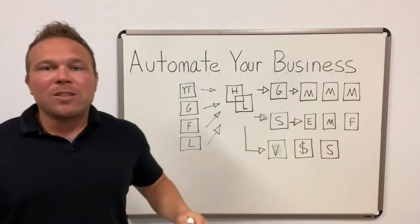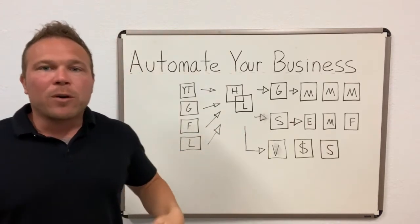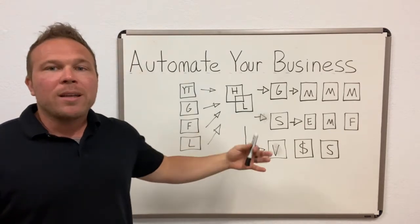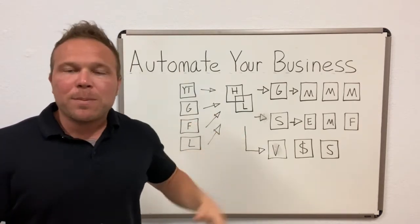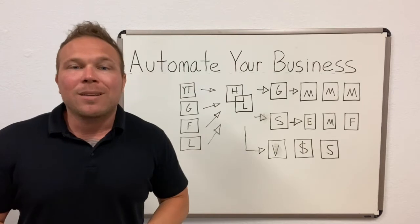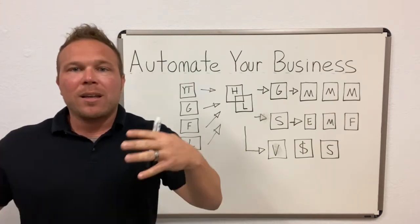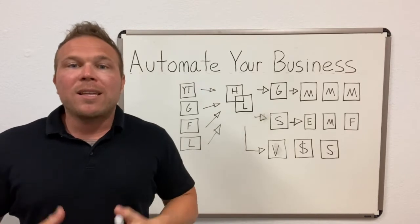So when automating your business, you want to have a blueprint and this is my first lesson in my automation course is how to set up a blueprint. You have to have the blueprint in place first before you start building any automation. Same thing as if you were building a house. If you don't have a blueprint, that house is going to get built all wrong, right? And same thing for your business.